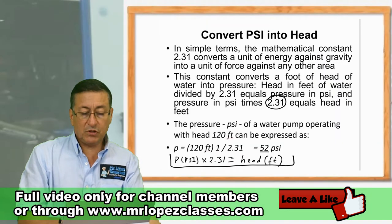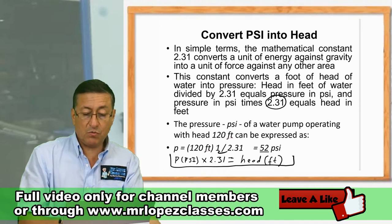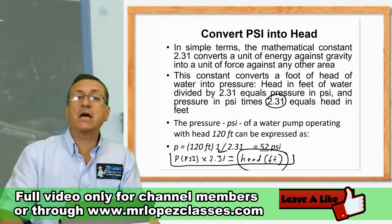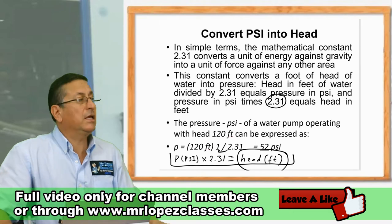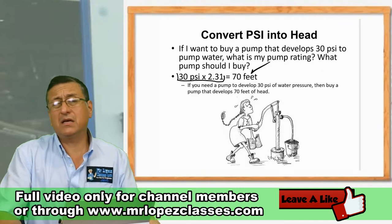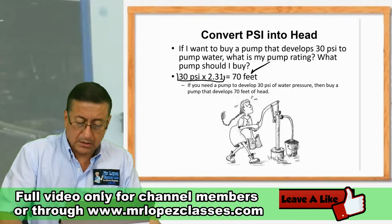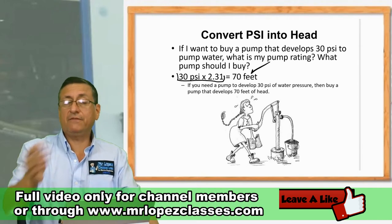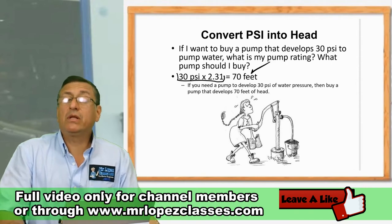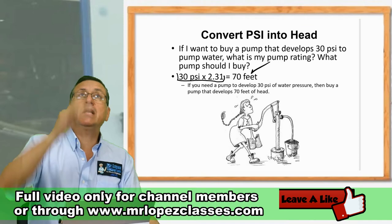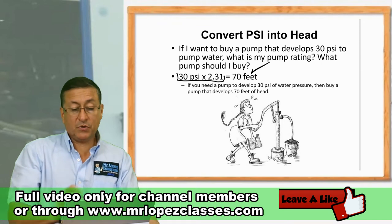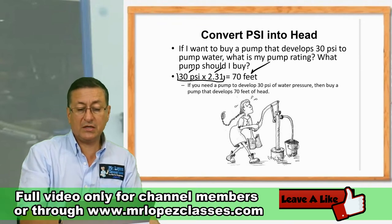The formula is simple: if you multiply the PSI times 2.31, that gives you the head of the pump. The head equals pressure times 2.31. For example, if I have a pump of 30 PSI, the maximum distance the fluid can reach is 30 times 2.31, which equals 70 feet.